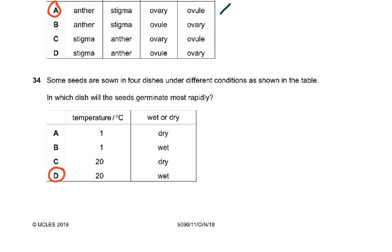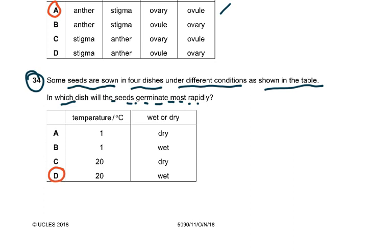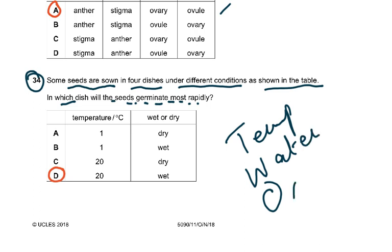Question 34: Seeds are sown in four dishes under different conditions — temperatures of 1°C or 20°C, and wet or dry. The factors necessary for germination are adequate temperature, water, and oxygen. Not air — oxygen specifically. It had to be 20°C and wet. One degree is too cold, even a fridge is around four degrees. The answer was D.